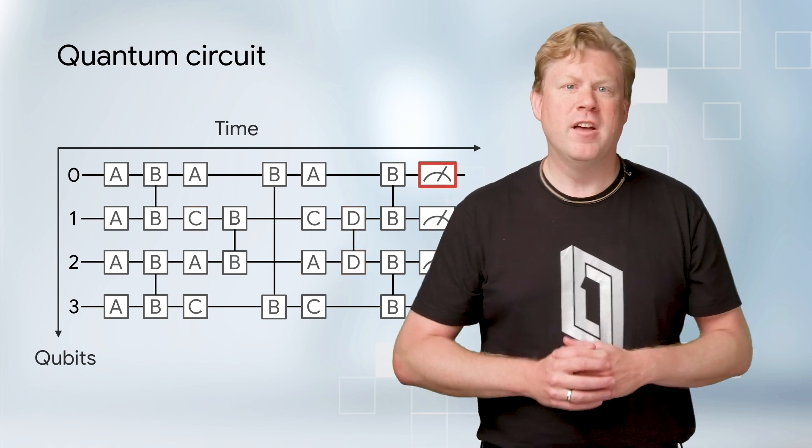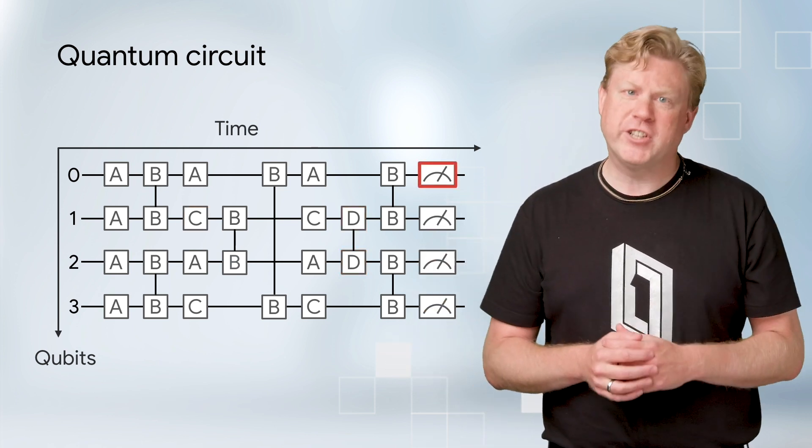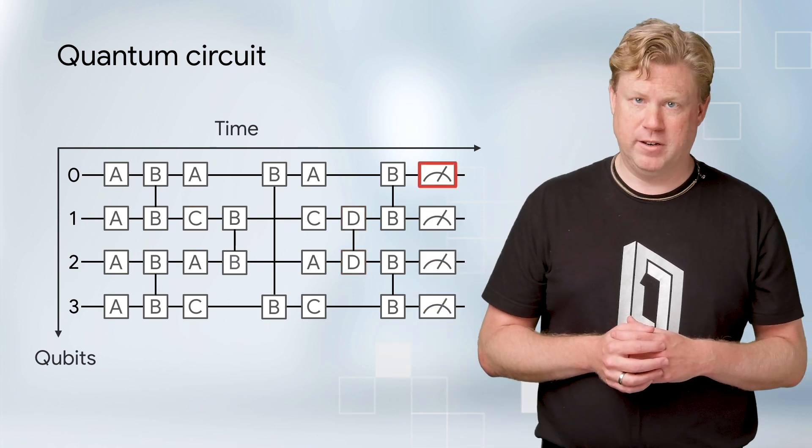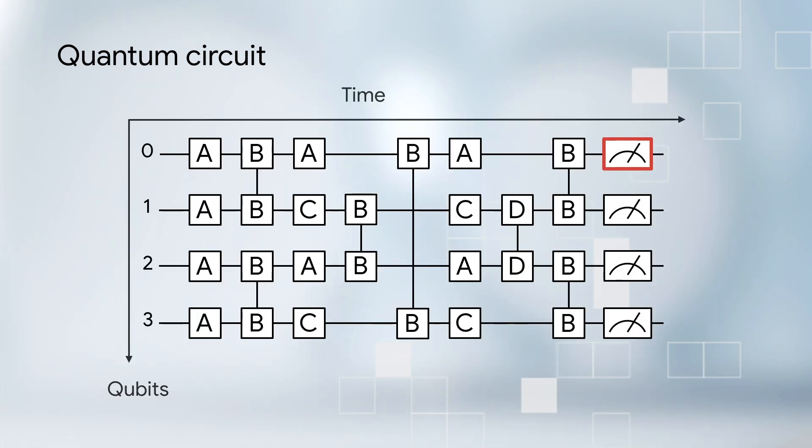Finally, one has instructions for reading out the quantum information. This corresponds to quantum gates that perform measurements and turn quantum bits into classical bits.